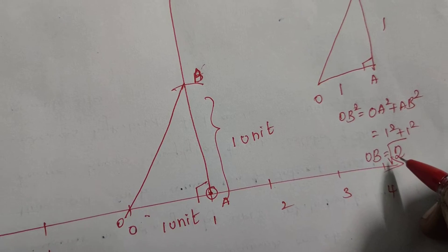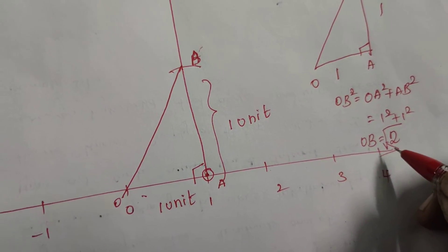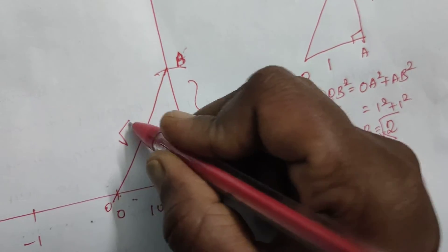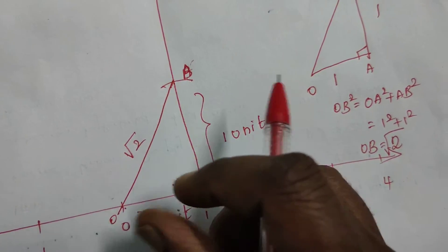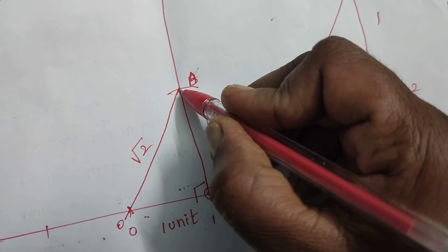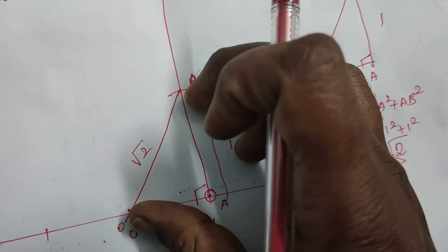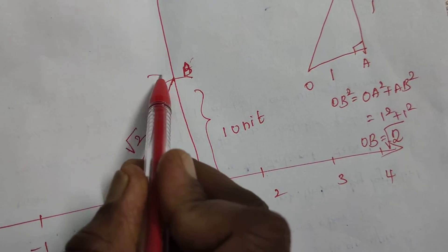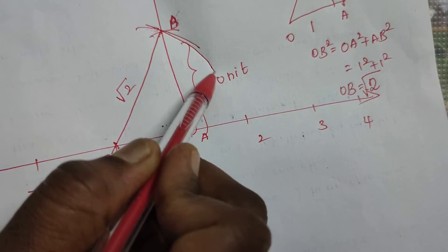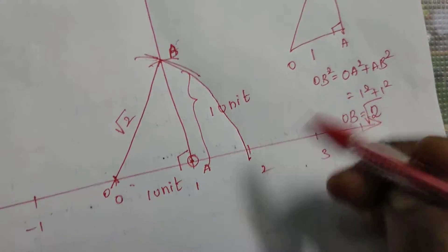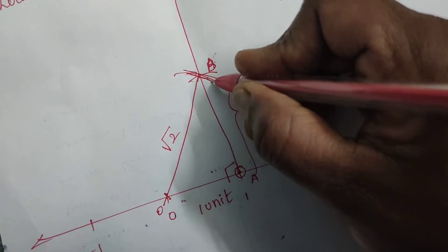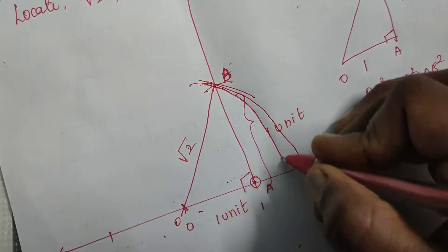When the square goes to the other side, it will become as root 2. So this measurement, from here to here, the measurement is root 2. So with your compass, what you do is from here to here, you extend the compass and draw an arc which will cut the number line somewhere between 1 and 2.